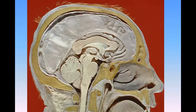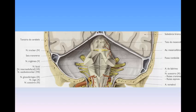It is lined by ciliated epithelium and is continuous below with the central canal of the medulla oblongata. Above, it communicates by means of a passage termed the cerebral aqueduct with the cavity of the third ventricle. It presents four angles and possesses a roof or dorsal wall, a floor or ventral wall, and lateral boundaries.